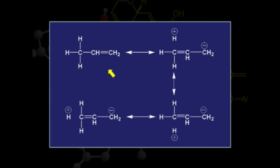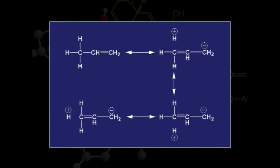Here we can see how the electrons present in this sigma bond are interacting with the neighboring pi bond and releasing electrons towards this position. Therefore, this hydrogen atom is acquiring a small positive charge, and because of this, a negative charge is developed here. Therefore, this neutral molecule is being changed to a charged structure.